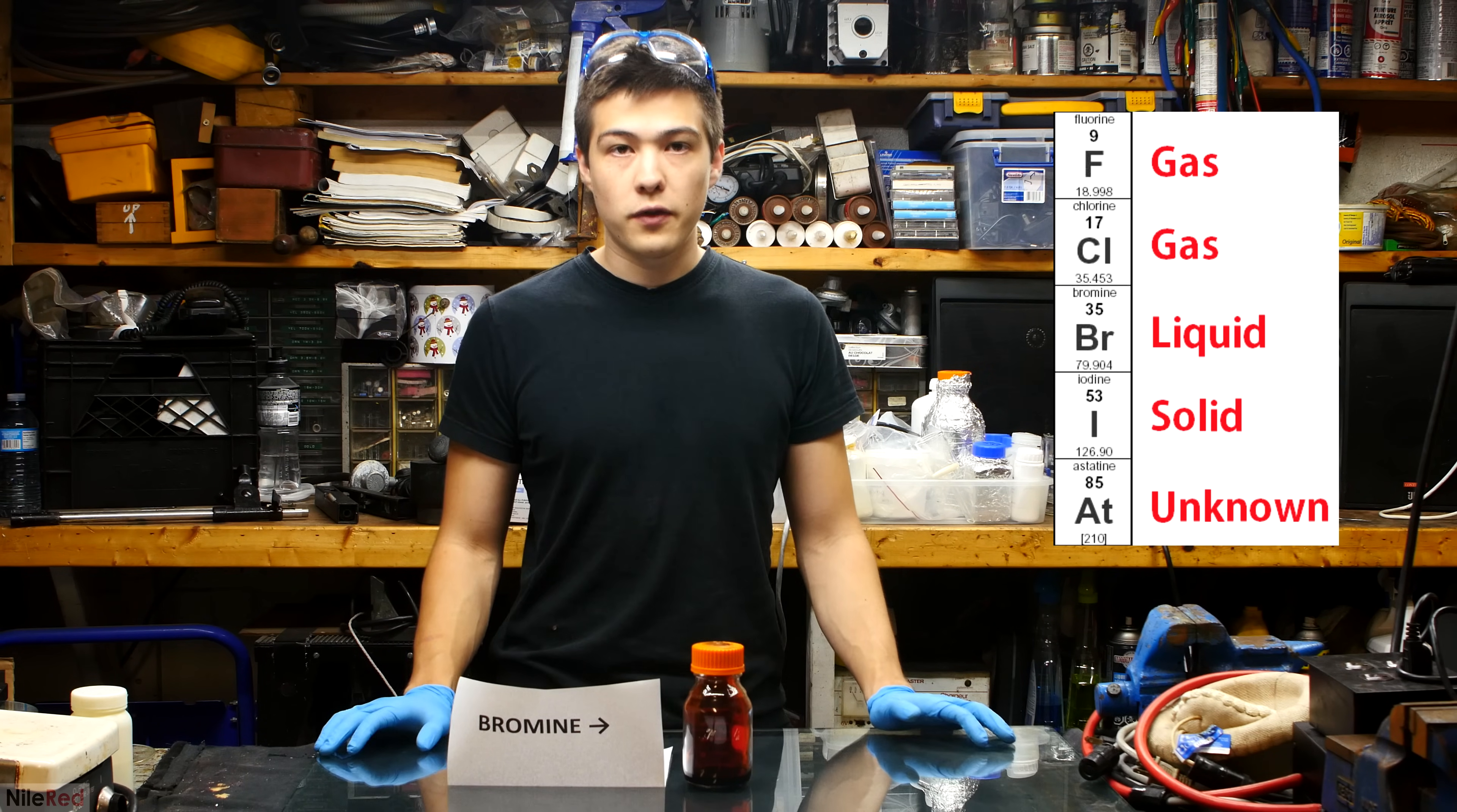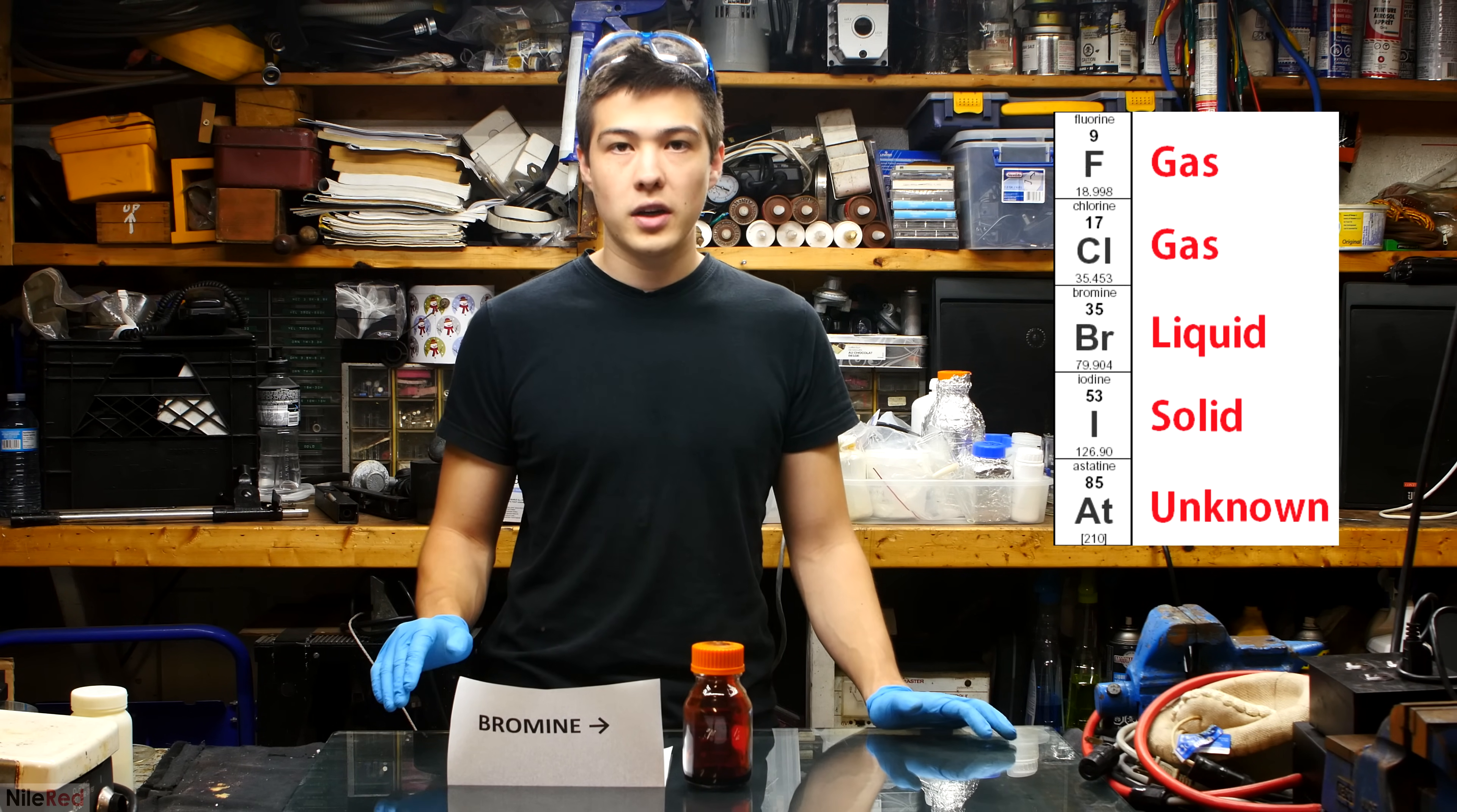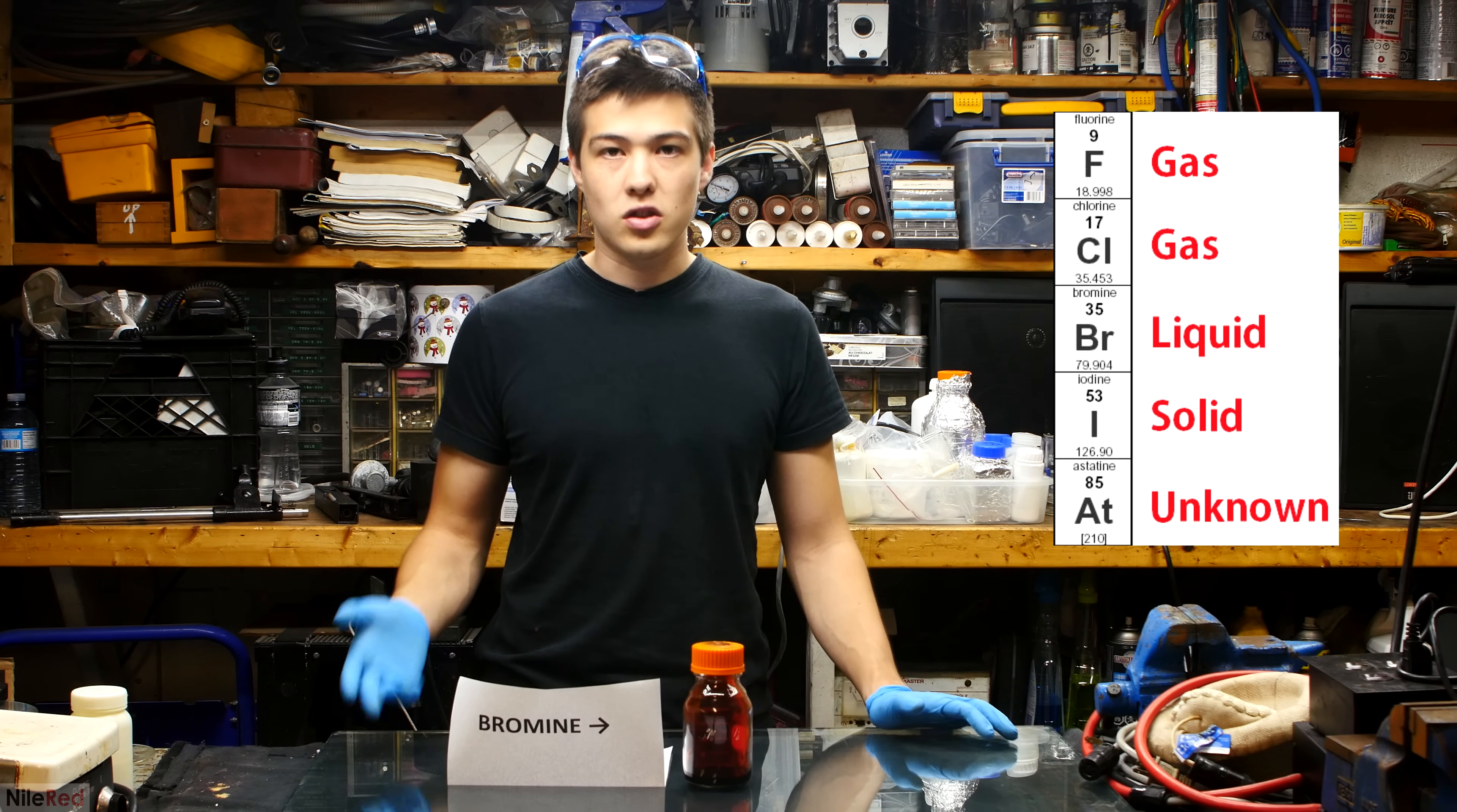The major physical difference between these elements is that as we go down the phases of the elements change. So when we start with fluorine we have a gas, below it is chlorine which is also a gas. When we get to bromine it's a liquid and when we go down one more and go to iodine it's a solid.